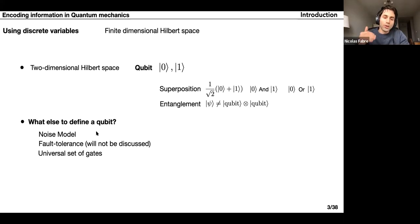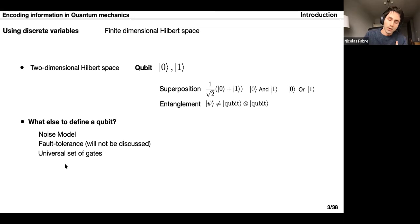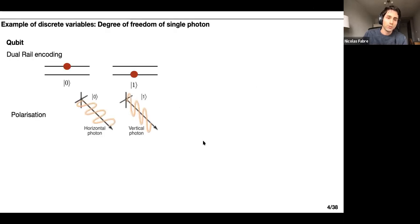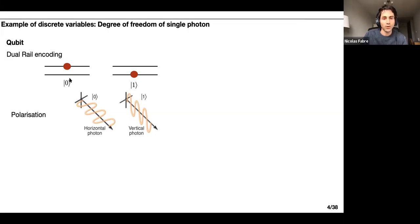Very rapidly, the fault threshold is the threshold from which you are able to correct errors. From a quantum computation perspective, you define a universal set of gates — a set such that performing products of gates within this set allows you to approximate any unitary matrix with finite precision. Discrete variables correspond, for instance, to the modes of single photons. A qubit can be encoded using dual-rail encoding, which is the presence or absence of single photons in two spatial paths, or you can use the polarization of single photons to encode a qubit.